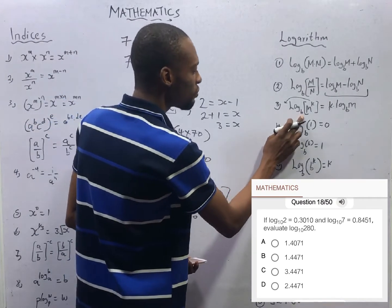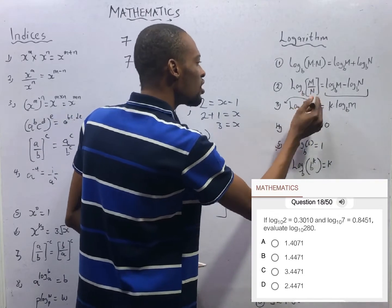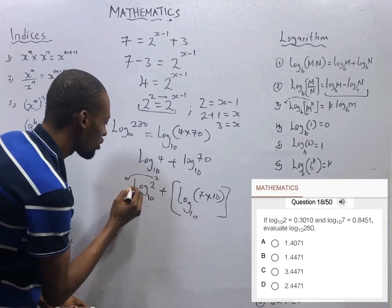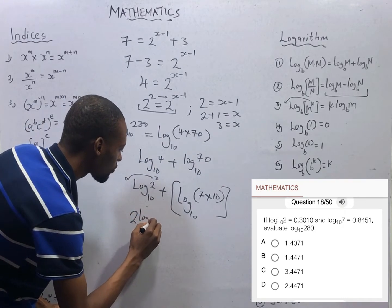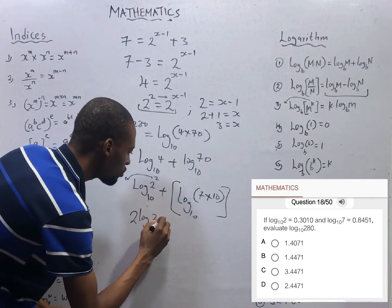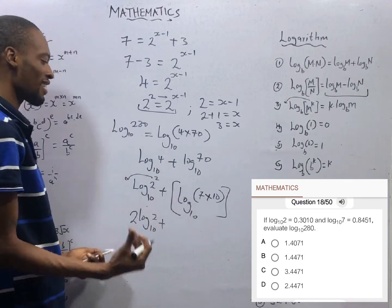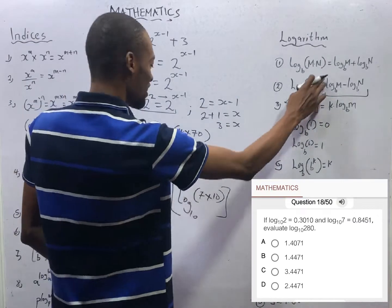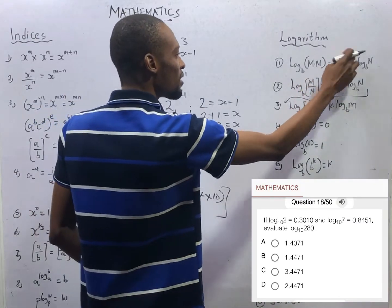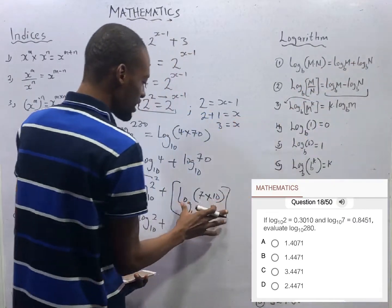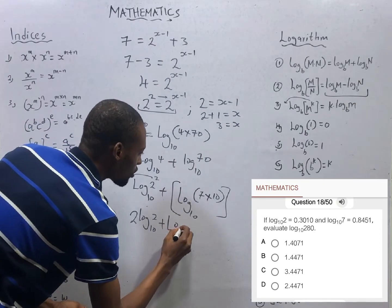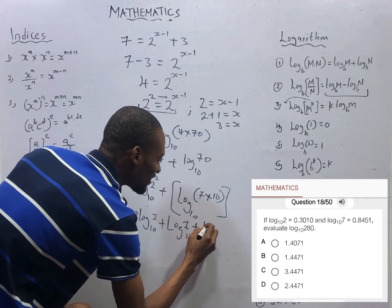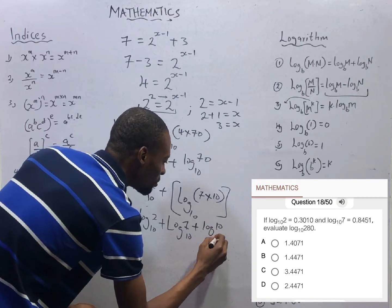Bringing down this power, we have 2 log 2 to base 10 plus, reapplying the law, this is the same thing as log m times n equals log m plus log n. So here, the same thing as log 7 to base 10 plus log 10 to base 10.